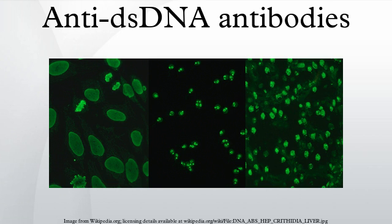Similar to the flow cytometry method of ANA detection, the multiplex immunoassay uses wells containing auto-antigens and HEp-2 extract coated beads. The bead sets are coated with specific auto-antigens and can be detected individually to allow identification of the particular auto-antibody. Automated analysis of the well fluorescence allows for rapid detection of auto-antibodies.